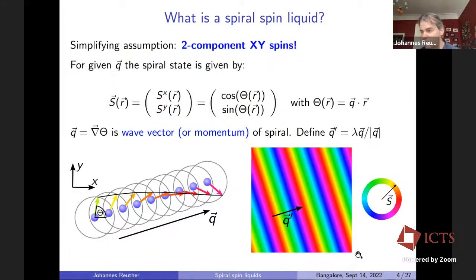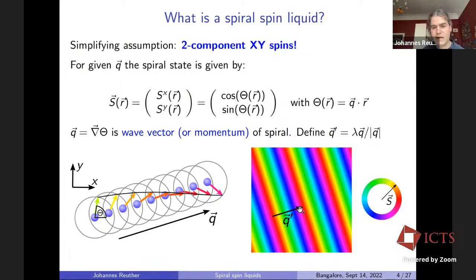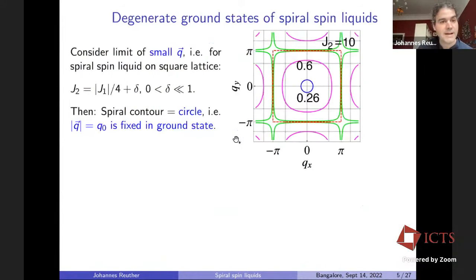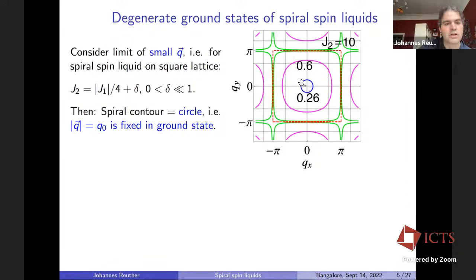A single-Q spiral can be illustrated with the color at each point in real space denoting where the spin points. A spiral manifests in a stripey fashion, with the arrow indicating the direction of the momentum and its length the wavelength, going from red to red. We consider the limit of small Q, meaning we are just slightly above the threshold of one quarter on the square lattice, so the spiral contour becomes a circle with the momentum length fixed to Q₀. This way we try to avoid order-by-disorder effects.